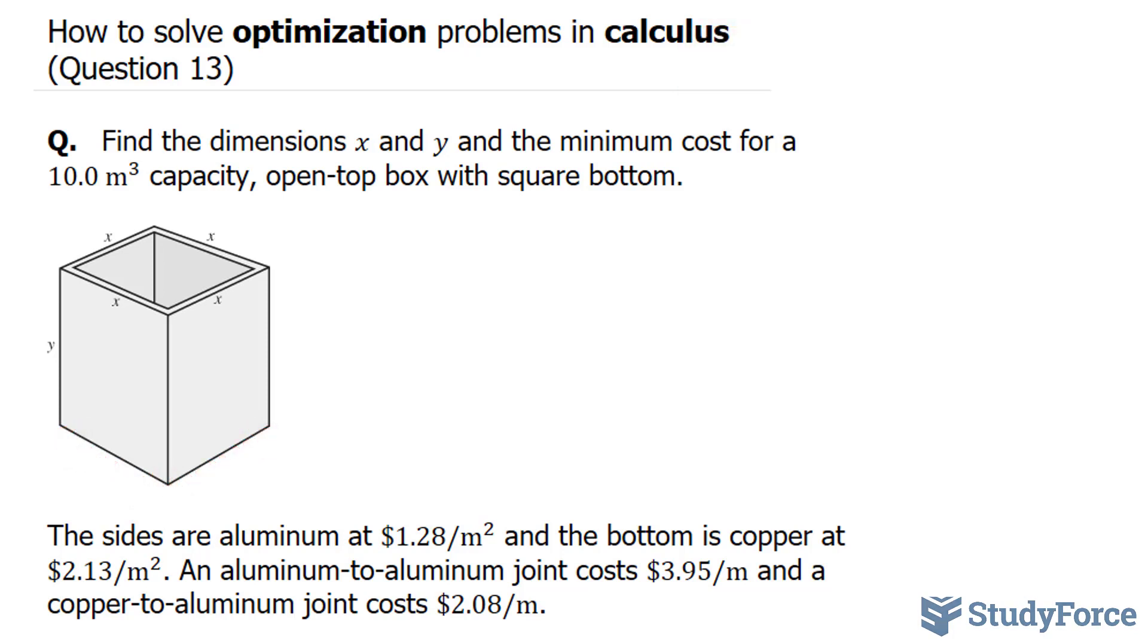The best approach to answering this question is to write down the costs as provided in the question. We are told that the sides are aluminum and it costs $1.28 per meter squared. The area for the side, which can be represented as x times y, multiplied by the rate of $1.28, gives us the cost. So the cost of the sides are $1.28 times x times y, and that's the aluminum side.